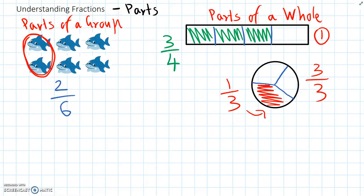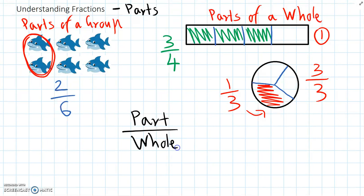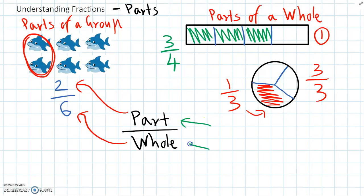So fractions can be used for groups or for one whole number. One way to think of fractions is it's always the part over the whole. So with our sharks, the part was two — two sharks out of the whole, or the total, of six sharks. And we give names to each of these numbers in maths. The top number showing the part is called the numerator, and the whole number at the bottom is called the denominator.